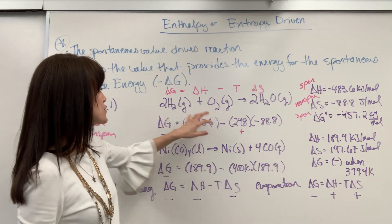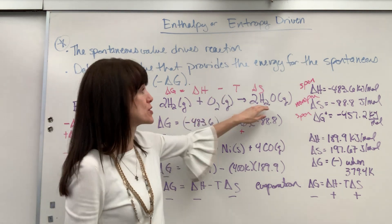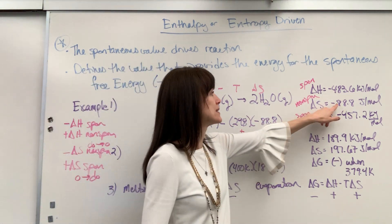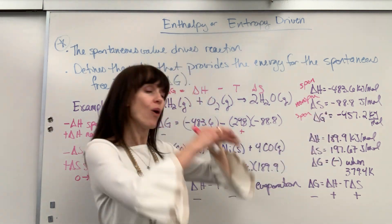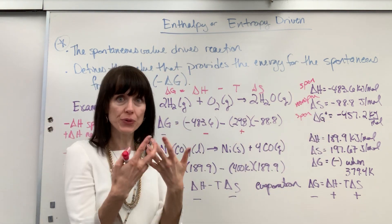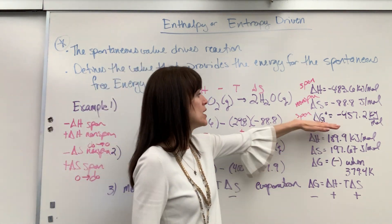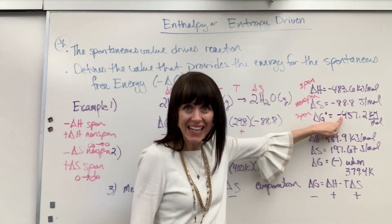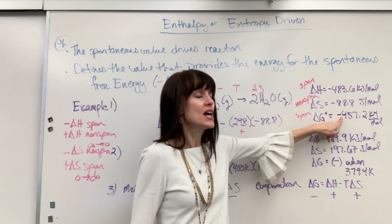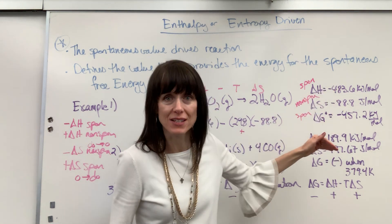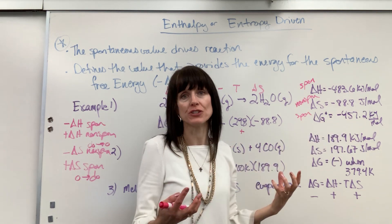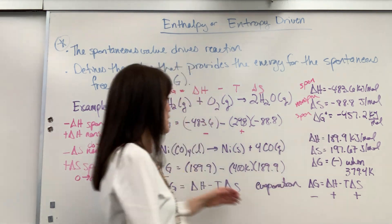That negative delta S is going from disorder to order, becoming more organized, non-spontaneous. And I wanted to point this out. You can see this. We're going from three gas moles to two gas moles. It's becoming more organized, requires energy. That's why it's negative, non-spontaneous. Now, overall, when we put all three laws of thermodynamics together, at 25 degrees C, delta G is negative, spontaneous, energy available to do work.